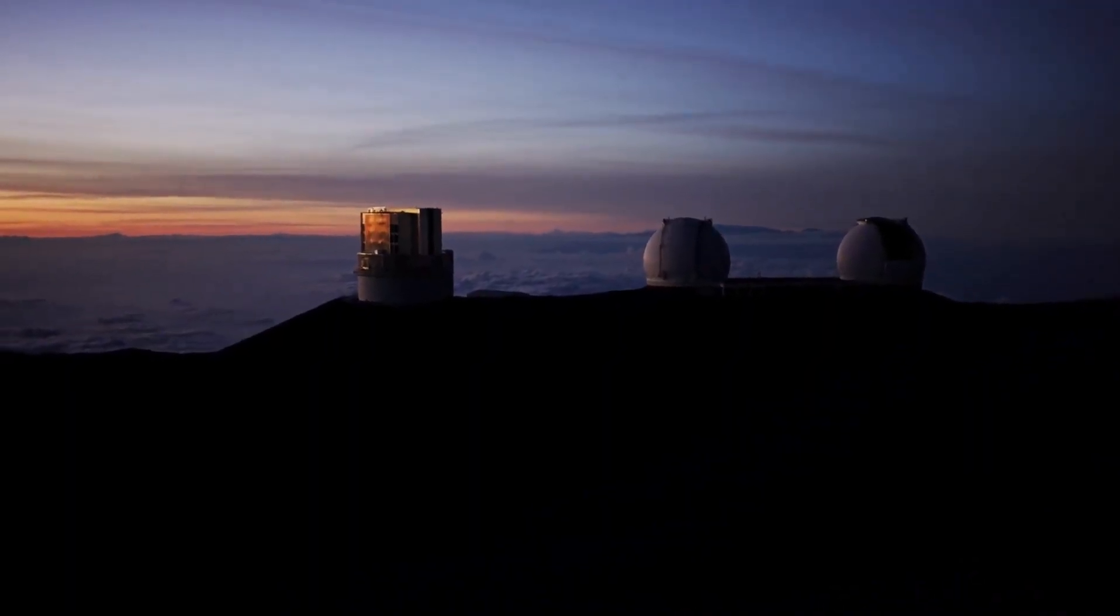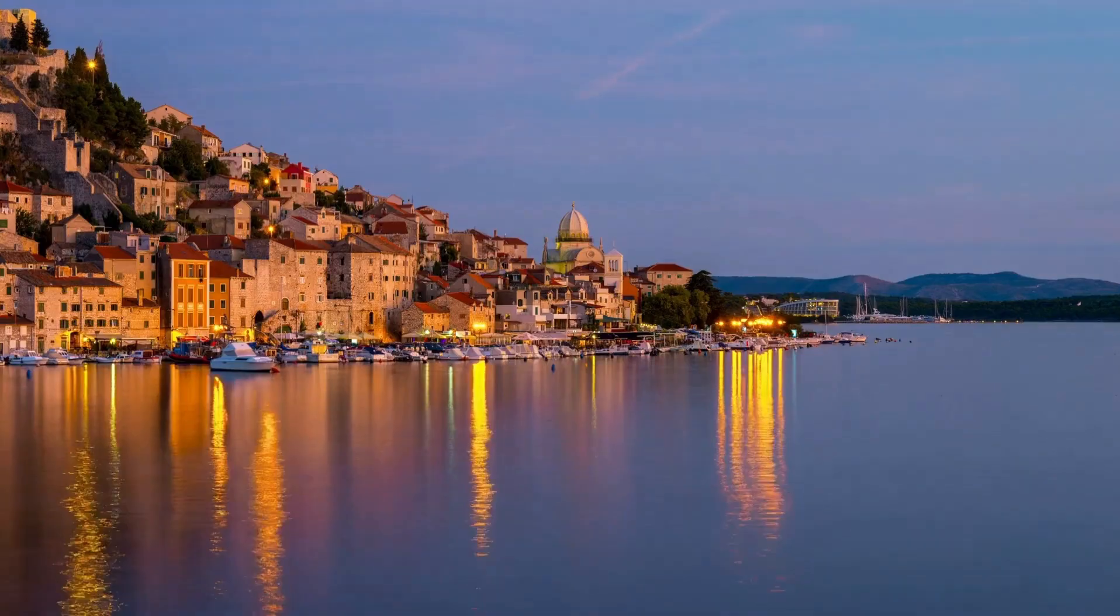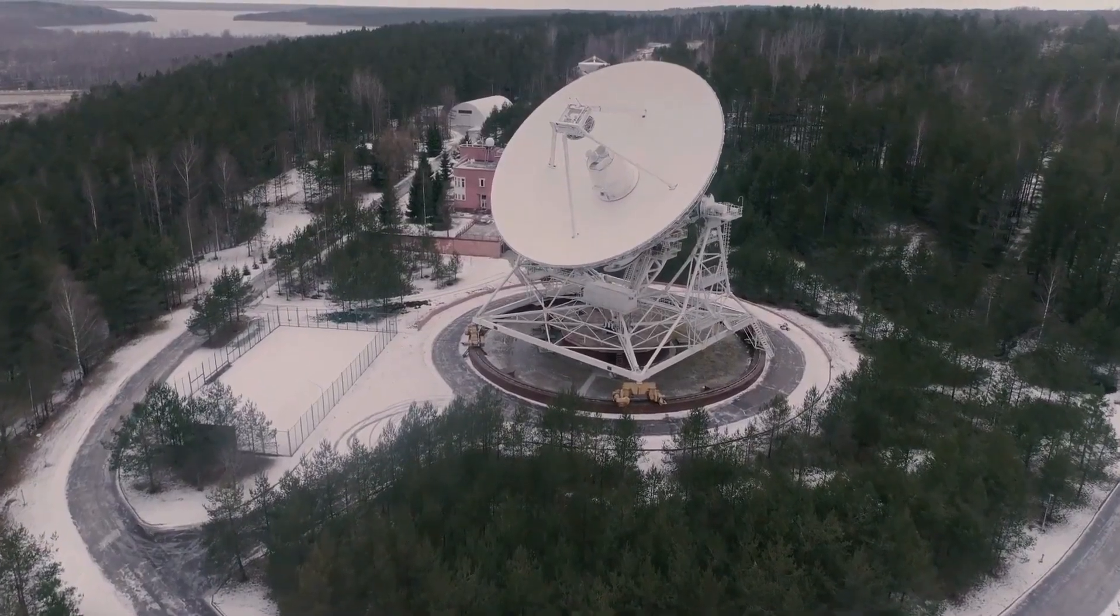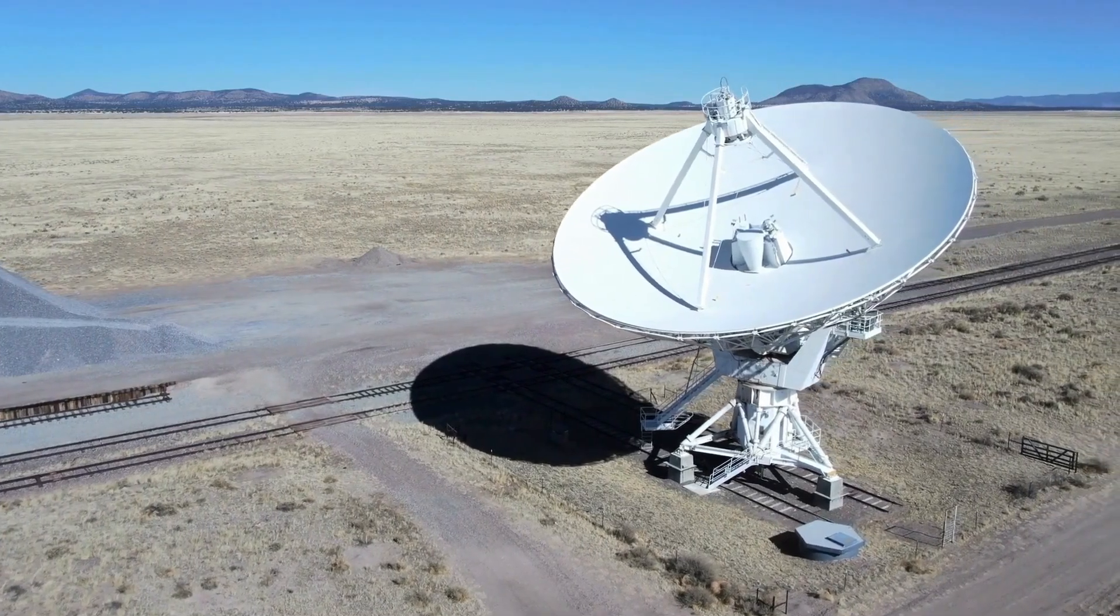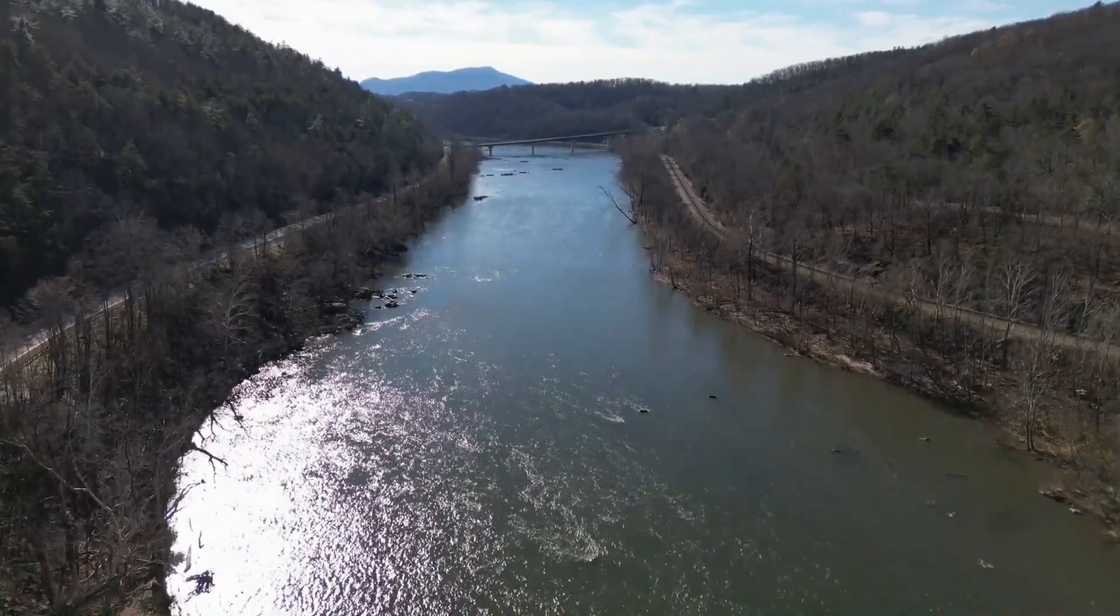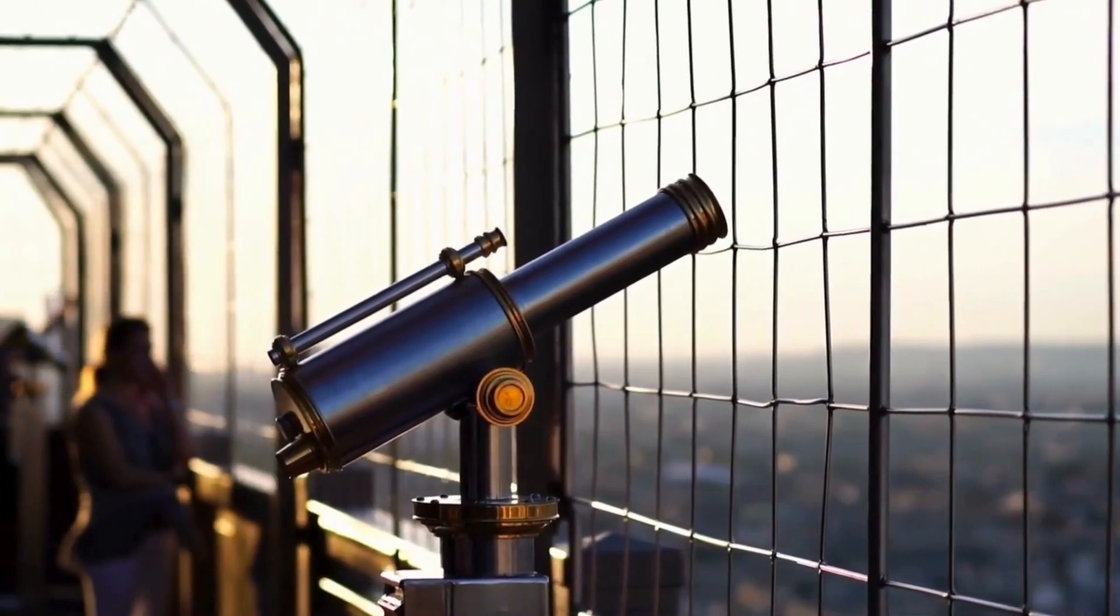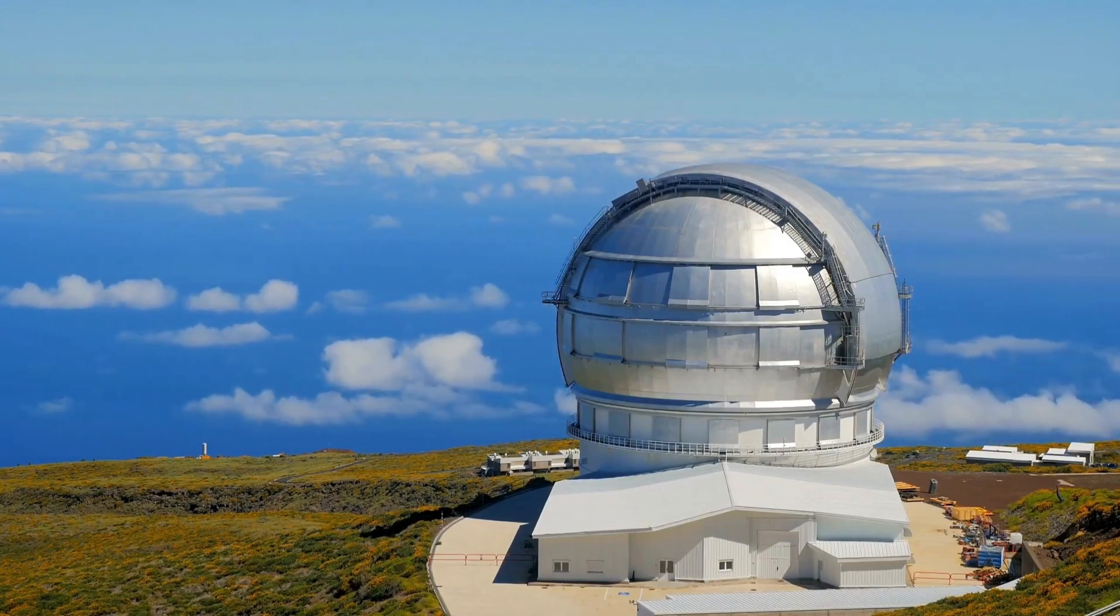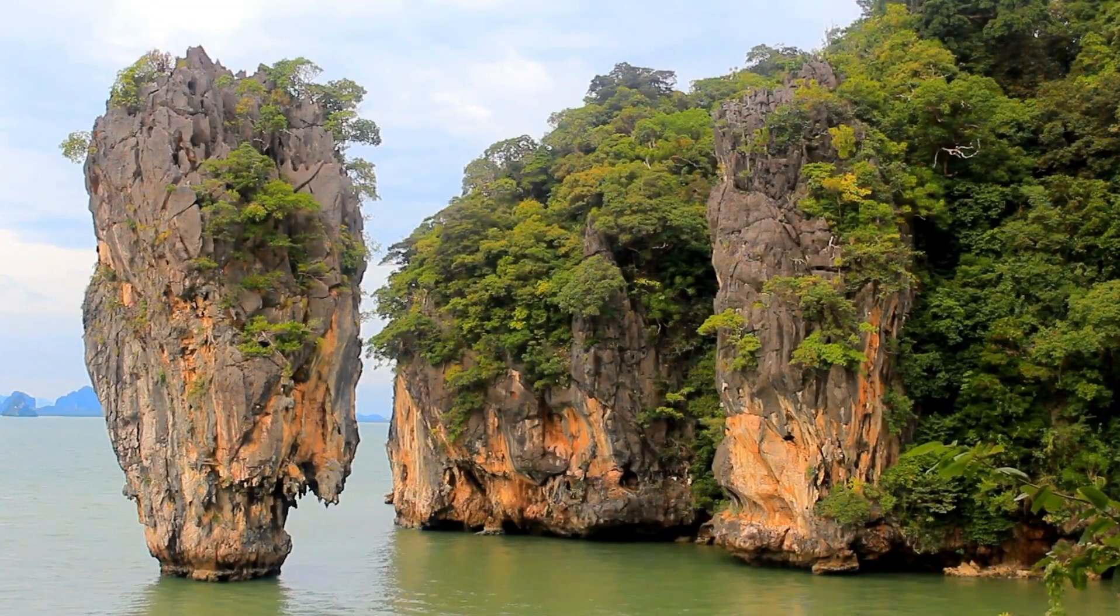Continuing our search for habitable worlds, we turn our attention to Teagarden star, an ancient red dwarf located about 12 light-years away. Teagarden star has an intriguing distinction. It hosts two known exoplanets, both of which reside in the habitable zone. This makes them particularly exciting candidates to consider as potential superhabitable worlds. The relatively short distance between these exoplanets and Earth provides an exciting opportunity for further exploration and detailed study. Scientists believe that these worlds may possess the necessary conditions for habitability.